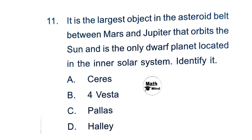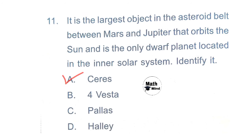Question 11: It is the largest object in the asteroid belt between Mars and Jupiter that orbits the sun, and is the only dwarf planet located in the inner solar system. Option A is correct: Ceres.